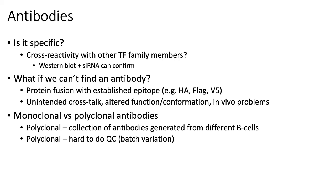Some of the problems with using antibodies in the ChIP-seq protocol is that it turns out to be really hard to get a highly specific antibody, because a lot of transcription factors are part of larger families or share DNA binding domains that are highly similar with other unrelated transcription factors. So you can develop an antibody against your transcription factor, but it can be hard to develop one that doesn't also cross-react or recognize TFs that are not of interest to you.